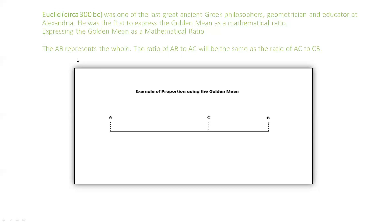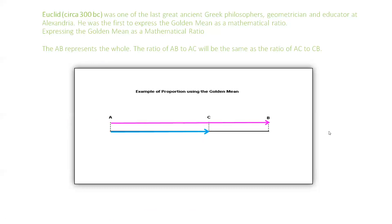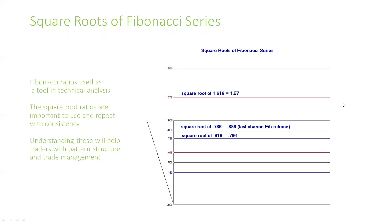Moving up to 300 BC, Euclid was the first to express the golden mean as a mathematical ratio. In his formulation, AB represents the whole: the ratio of AB to AC will be the same as the ratio of AC to CB. You can look at the proportions shown here where they're sectioned off, and I'll show you some interesting examples of this in just a moment.